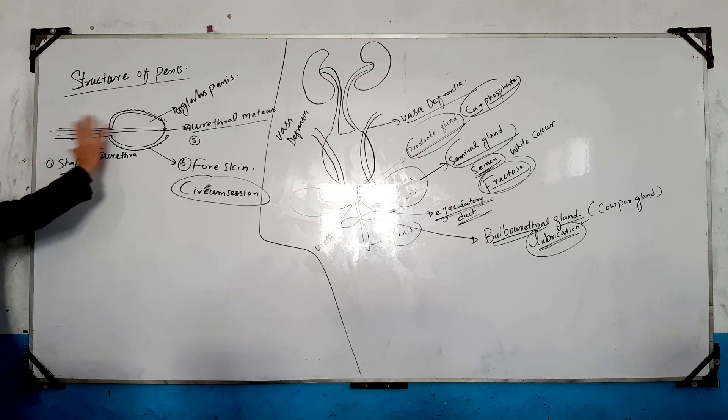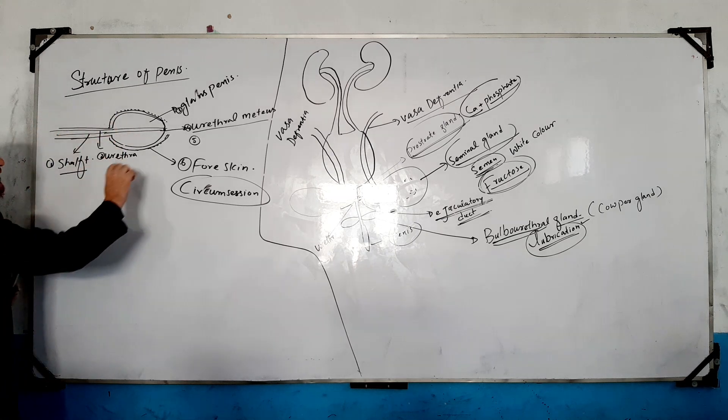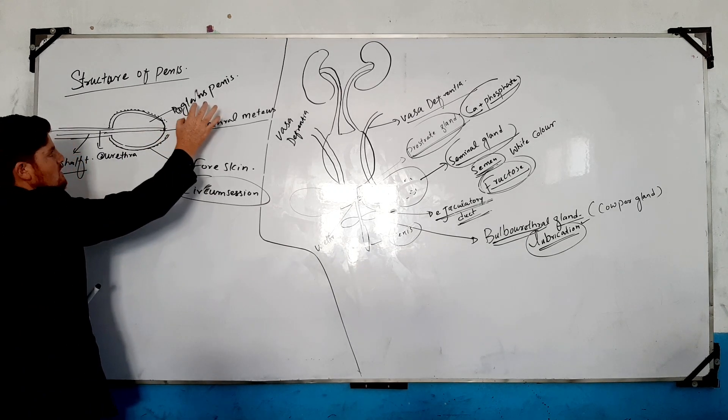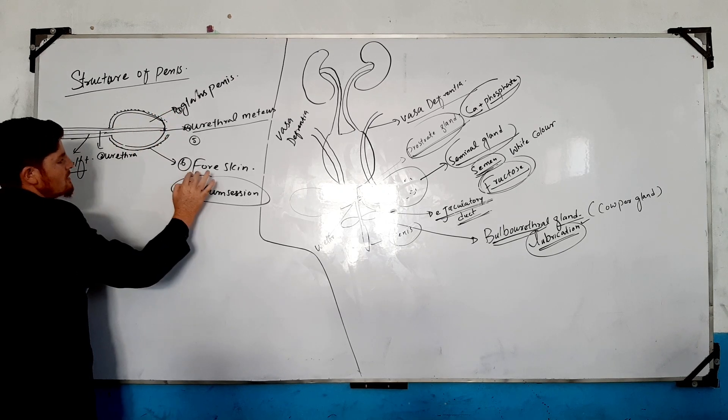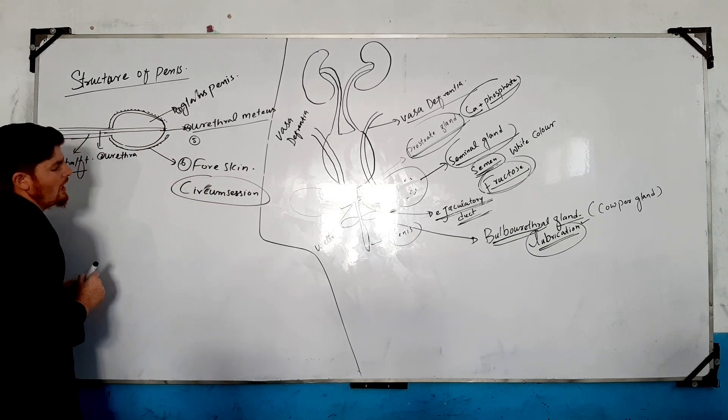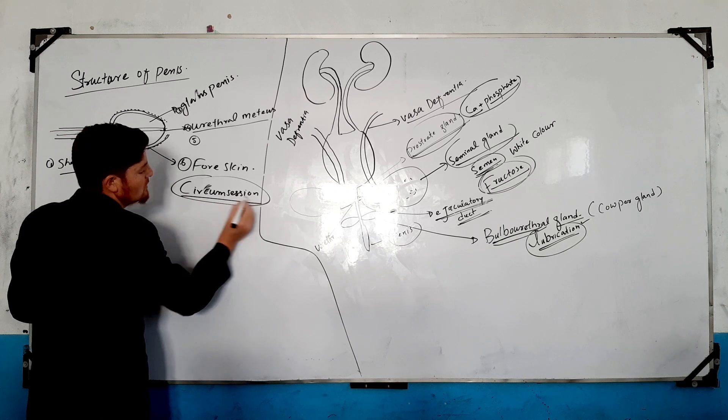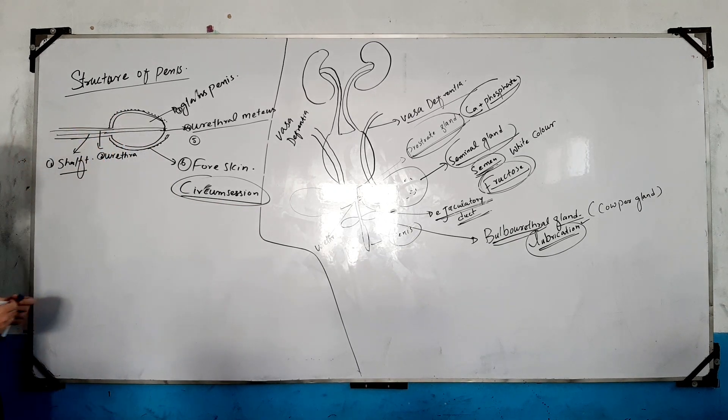Now we're going to show you this one. That is the prepuce, which is a very small piece of skin. You can see the skin. That is the foreskin.